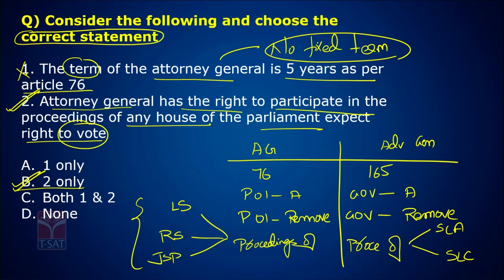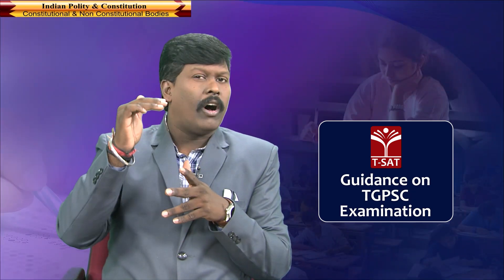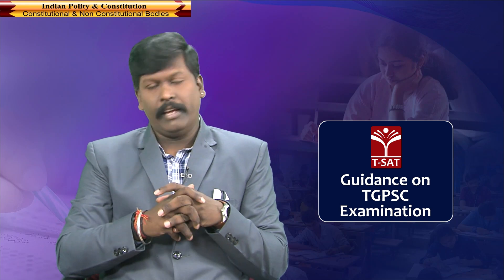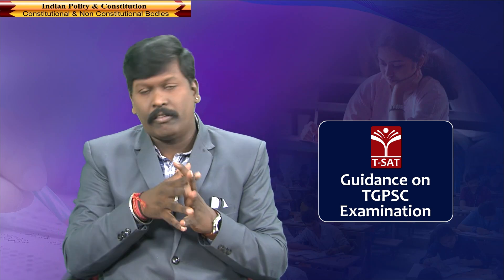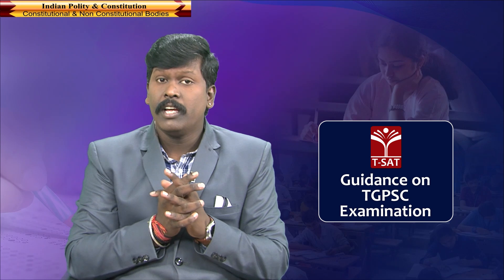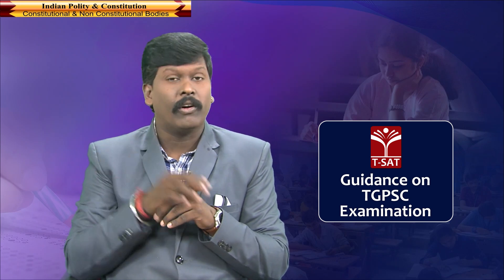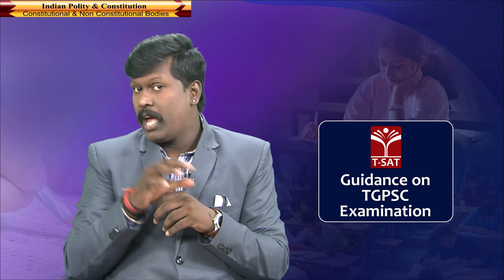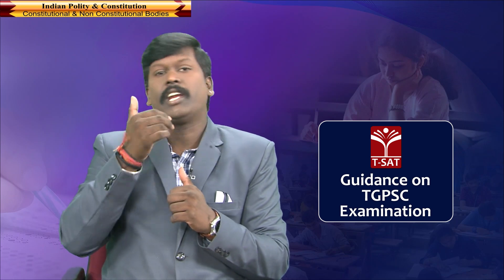The Attorney General is the first law officer of the country — the first legal officer. The Attorney General is the legal representative of the central government, while the Advocate General is the legal representative of the state government.